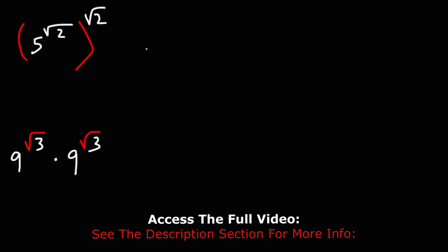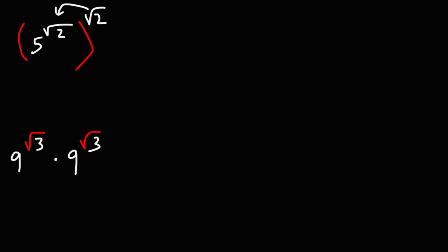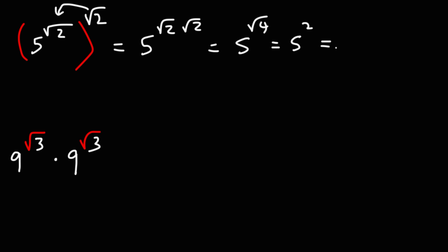What's 5 raised to the square root of 2, then raised to the square root of 2? The square root of 2 applies to everything inside, so we can multiply the two exponents. This becomes 5 raised to √2 times √2. Square root 2 times square root 2 is √4, and the square root of 4 is 2. So we have 5 squared, which is 5 times 5, equaling 25.